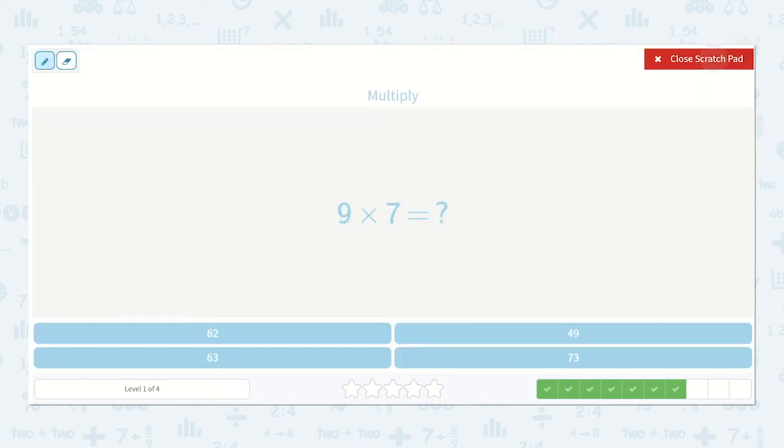Now we have 9 times 7. I know 10 times 7 is 70, so 9 times 7 is 7 less than 70, which is 63.